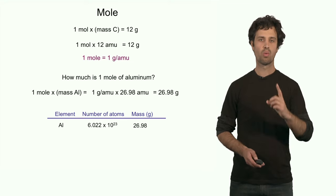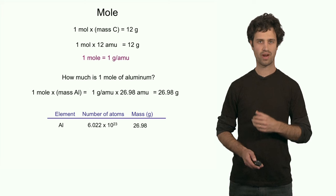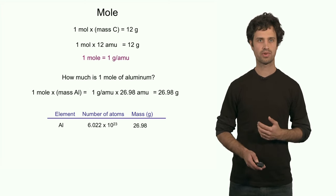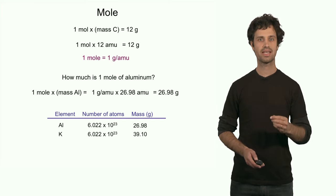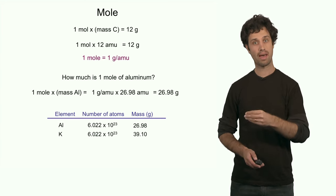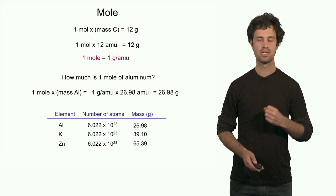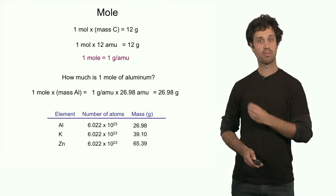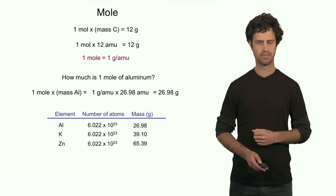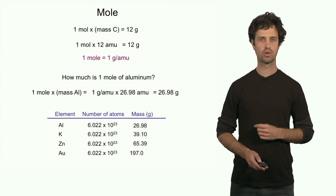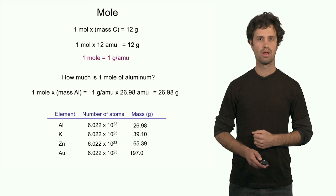In a similar way: one mole of aluminum, which is 6.022 times 10 to the 23rd atoms, equals 26.98 grams. This also holds for other elements. For instance, potassium — one mole of potassium atoms is 39.10 grams. 39.10 is the atomic mass in amu, but converted to grams by taking one mole of the element. Similarly, one mole of zinc weighs 65.39 grams — that's the same number as the atomic mass unit in the periodic table, but taking one mole converts amu into grams. Another example: one mole of gold atoms weighs 197 grams, converting amu into grams by multiplying by the mole number.